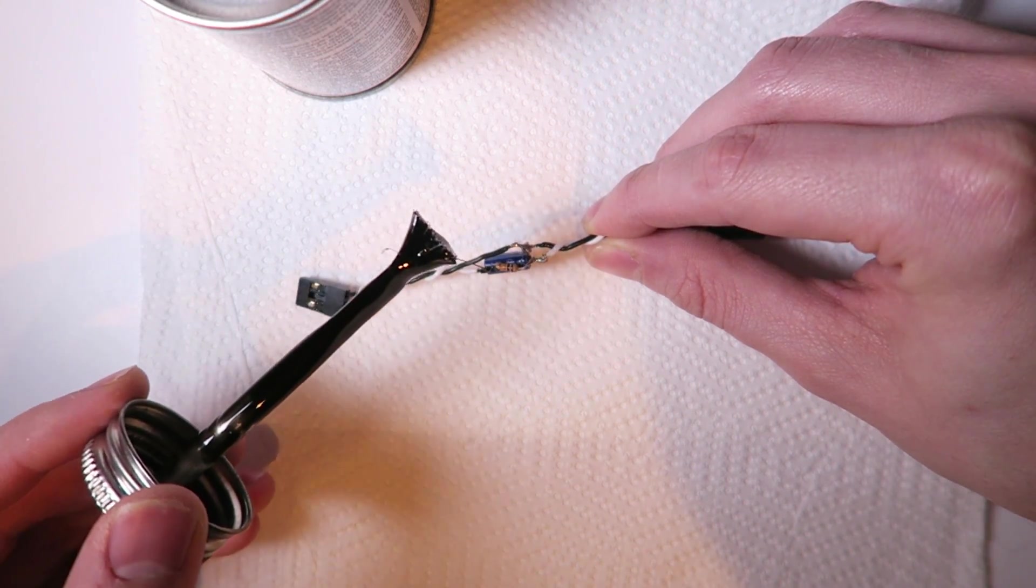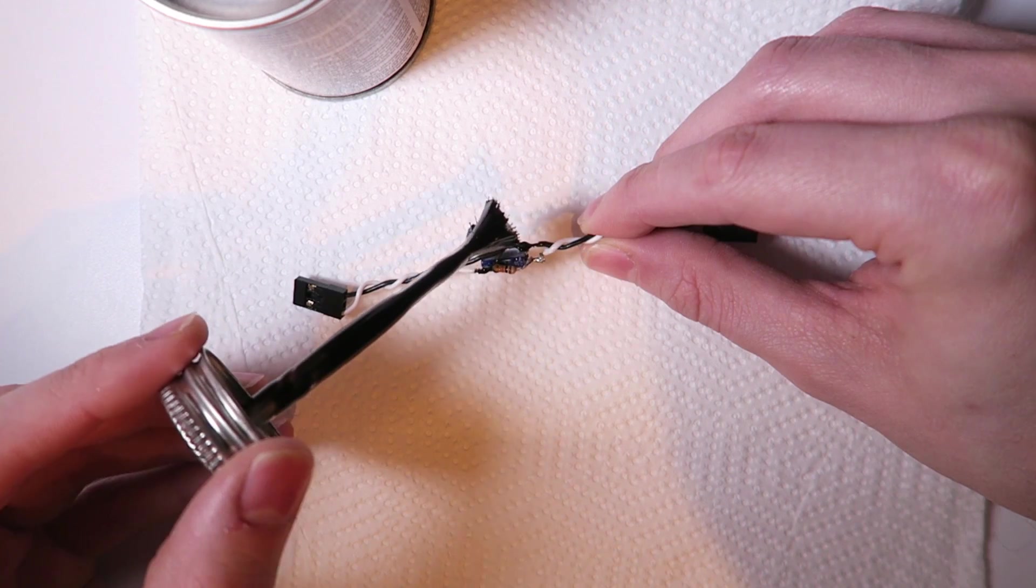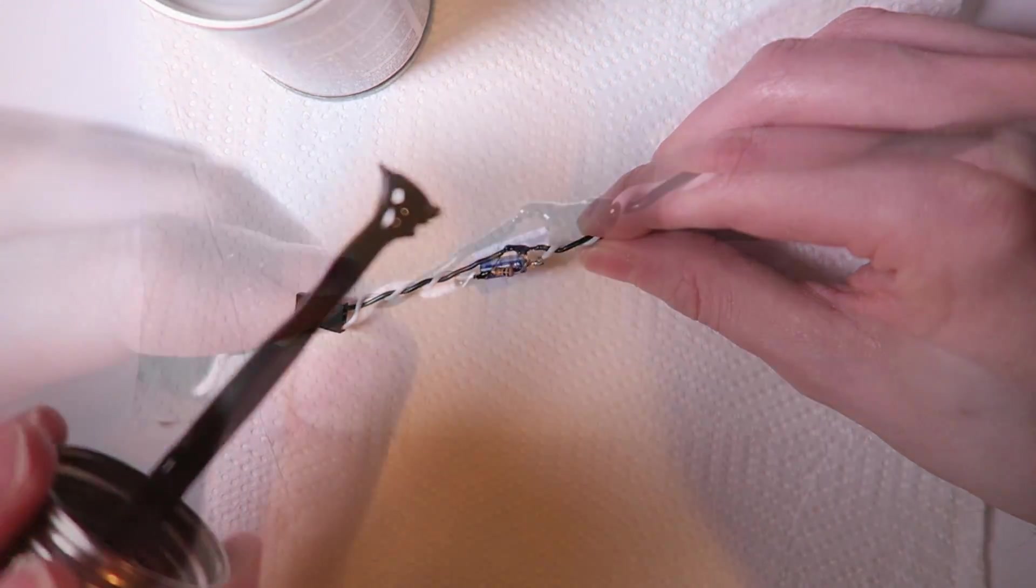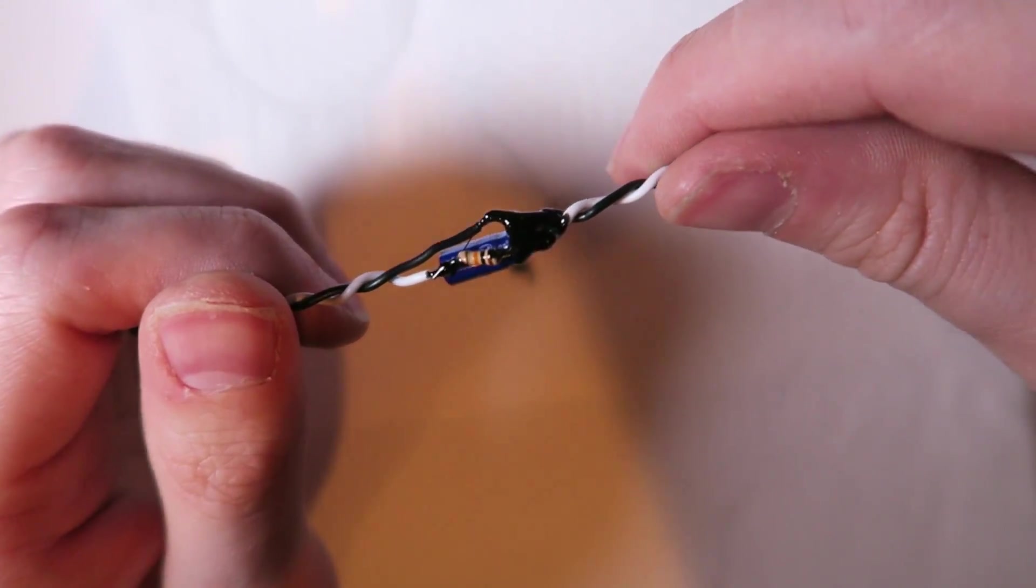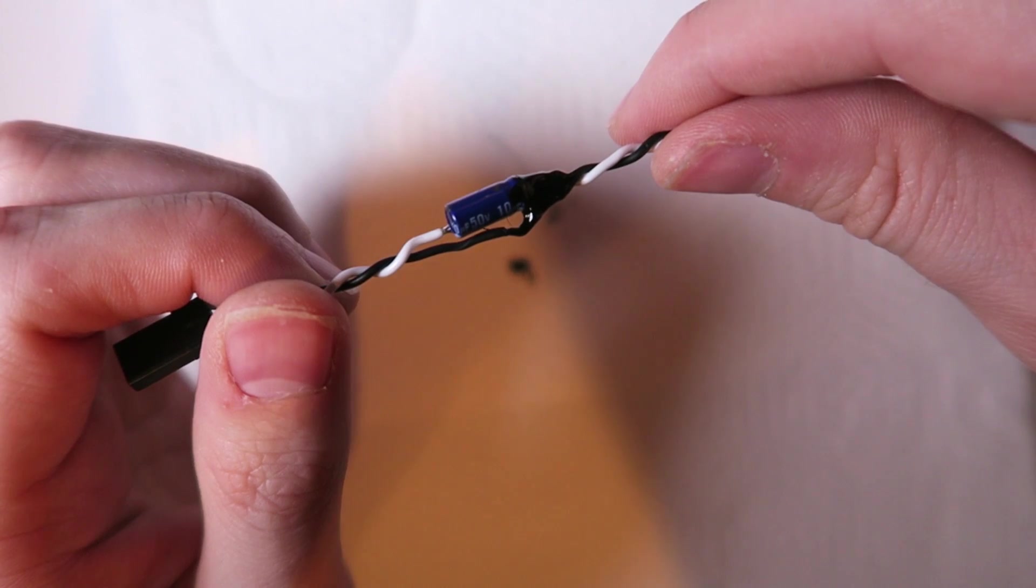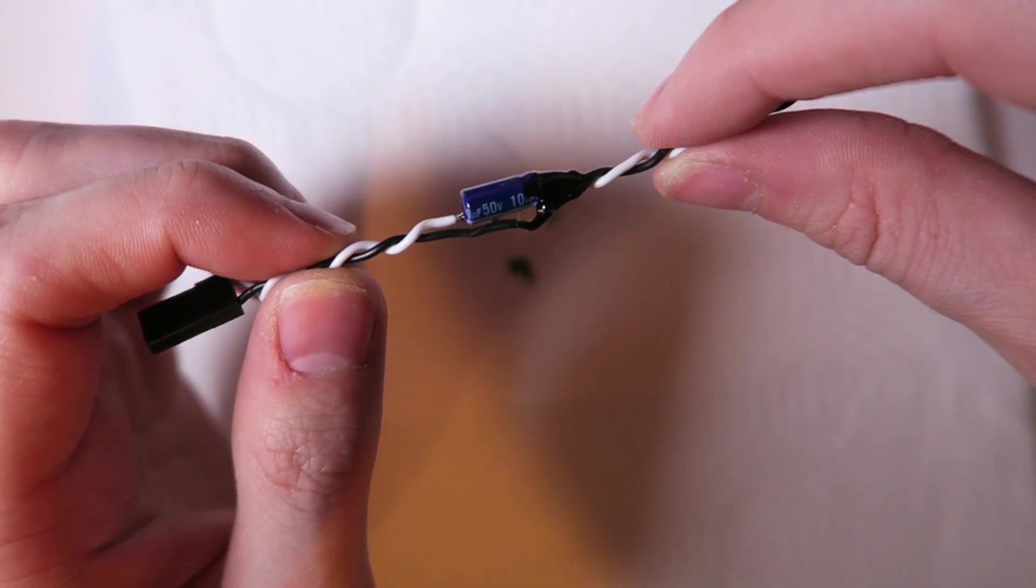And then, the last thing to do, this is liquid tape, I'm just covering all the exposed parts, making sure that they can't touch or short out. And here is the finished product. You're going to want to leave it 24 hours to cure, but it dries within about 5 minutes so you can touch it.